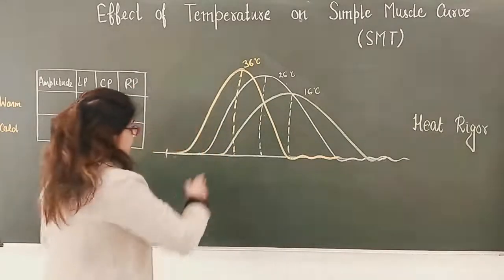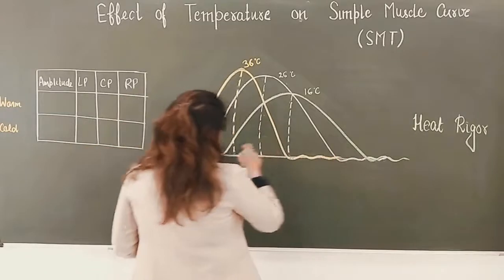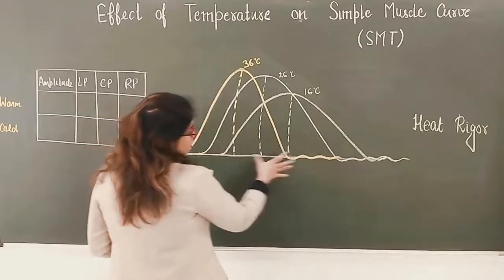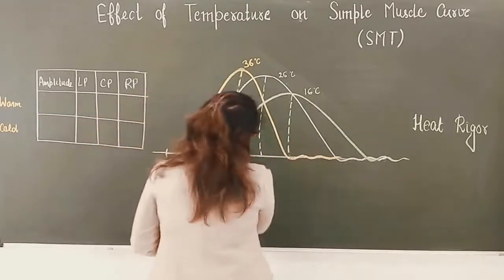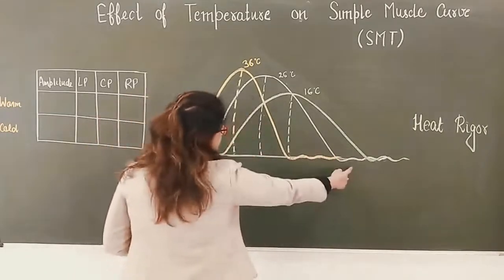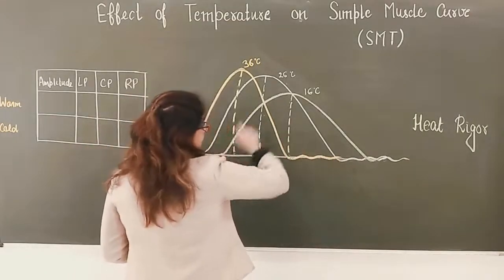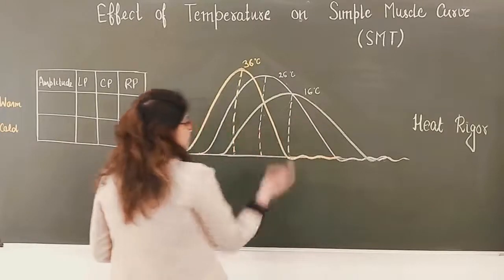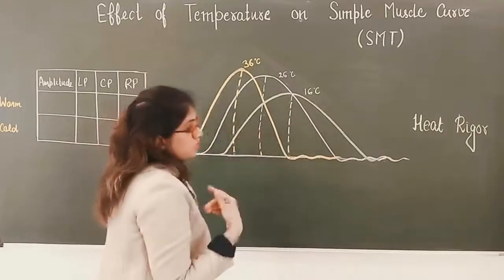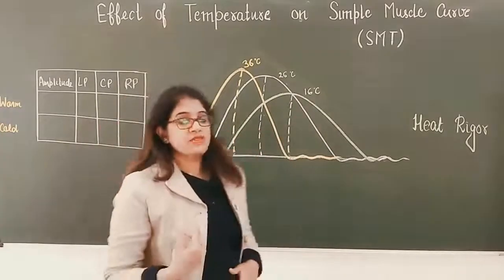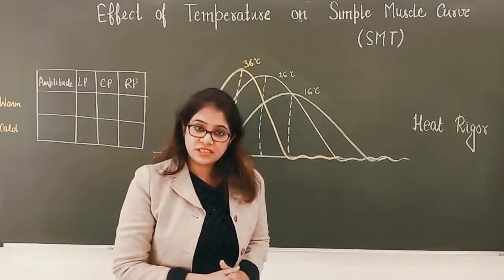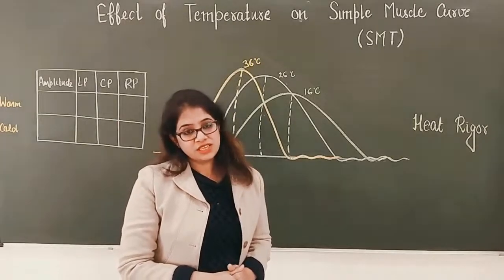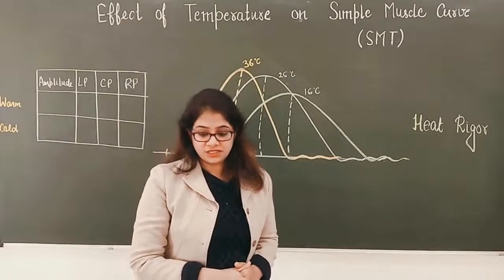In cold temperature, the duration of all phases has increased but the amplitude of the contraction has decreased. In other words, the force of contraction has decreased and the velocity of contraction has decreased.